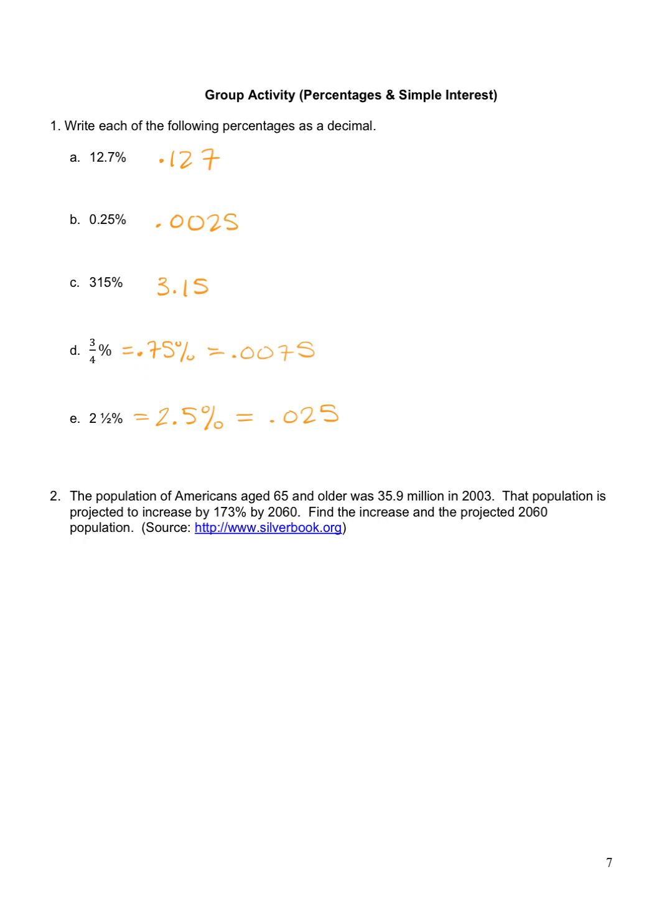So 173% of 35.9, that's the increase amount. That's how much we're going to increase the population by. So that would be 173% as a decimal is 1.73 times 35.9.